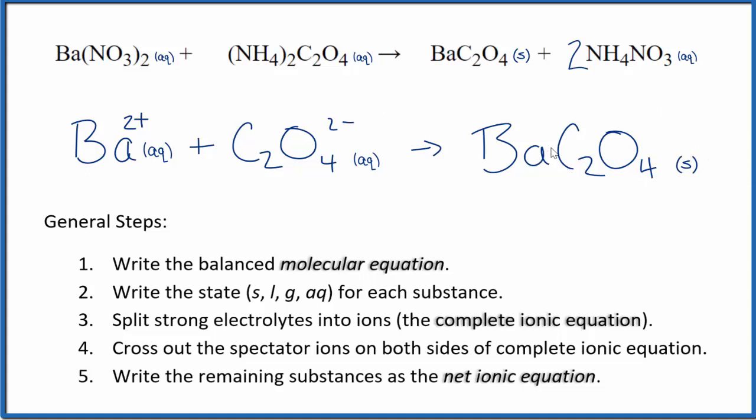If you count the atoms up, they're balanced as well. This is Dr. B with the net ionic equation for Ba(NO3)2 plus (NH4)2C2O4, barium nitrate plus ammonium oxalate. Thanks for watching.